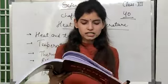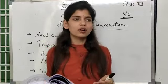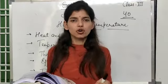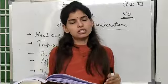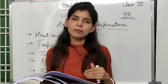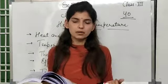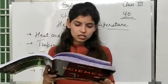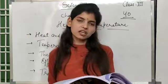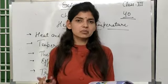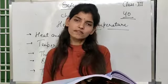We feel hot and warm in summers, and everything around us looks and feels hot. But in winters, we feel cold, and the objects we touch feel cold. We can identify a thing as hot or cold by touching it. But is identification by the method of touch always correct?